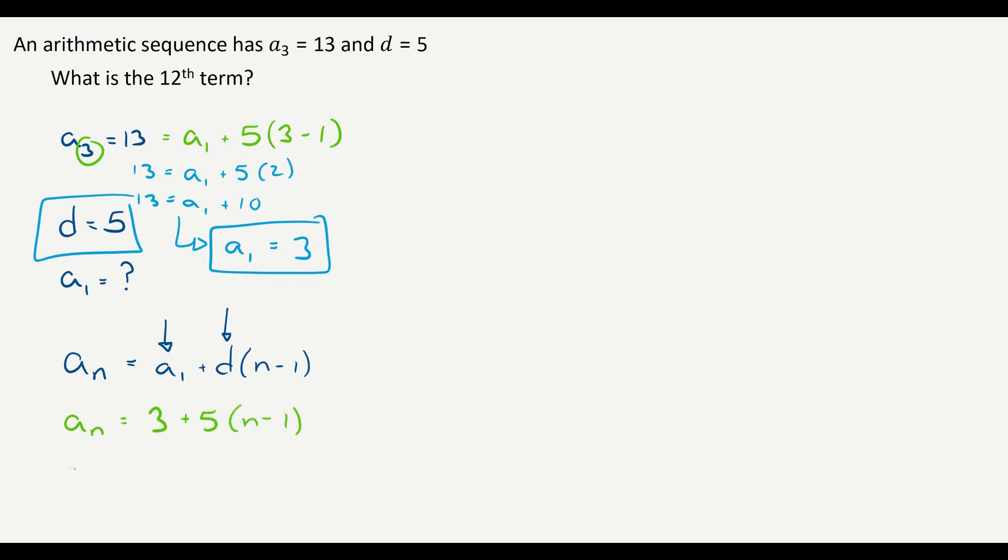So what is the 12th term? We go a sub 12 is equal to three plus five times 11, because of 12 minus one, which is three plus 55. So 58 is the 12th term.